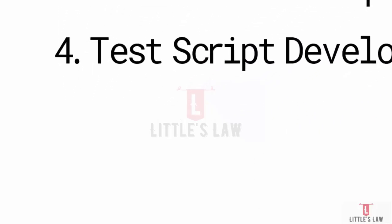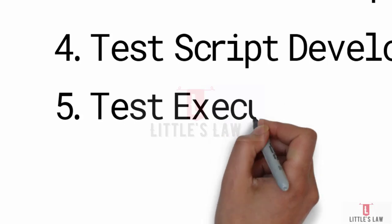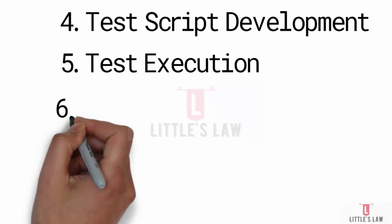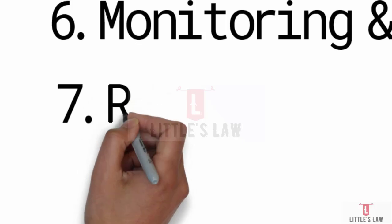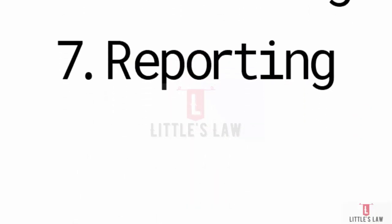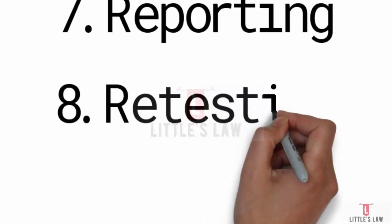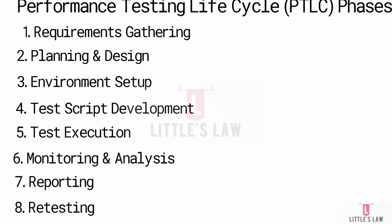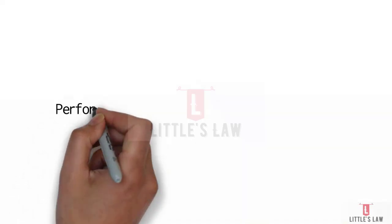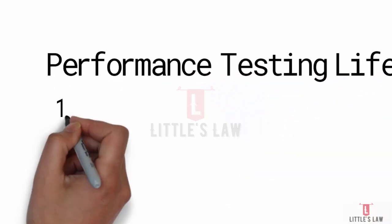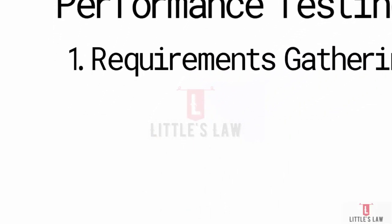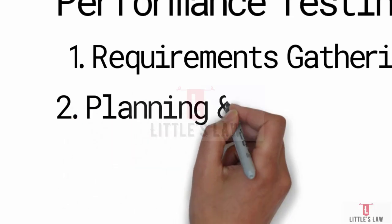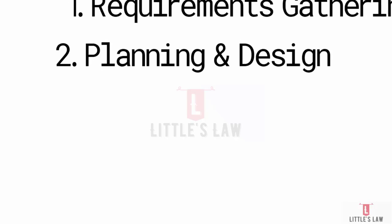We also identify non-functional requirements, gathering specific requirements such as acceptable response times, maximum load levels, and performance metrics. Finally, we look at service level agreements — understanding the SLAs the application needs to meet. For example, the response time for a transaction must be three seconds, or you must achieve 1,000 hits within a given time, or CPU utilization should be less than 30% and memory less than 5%. The outcome of requirements gathering is a documented performance requirements and objectives.